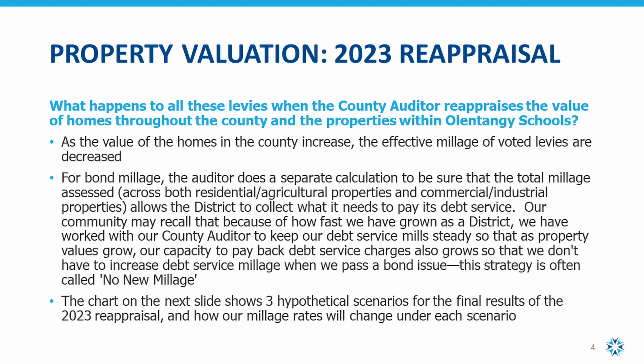A quick note about bond millage. To determine the bond millage each year, the county auditor reviews what a school district needs to collect to pay its debt service, and then ensures that the millage across all properties creates only enough taxes to cover debt service payments. Ultimately, we have worked with our auditor to leave the bond millage alone in most years because Olentangy Schools has grown large very quickly, and this allows the district to issue debt needed to build new schools without increasing the tax rate. This strategy is called no new millage.